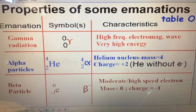What you're going to do is take down this chart right here. Most of these symbols can be found on Table O, but Table O doesn't have the list of the characteristics. So here we go.